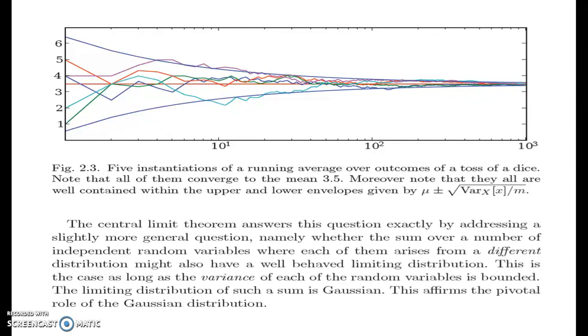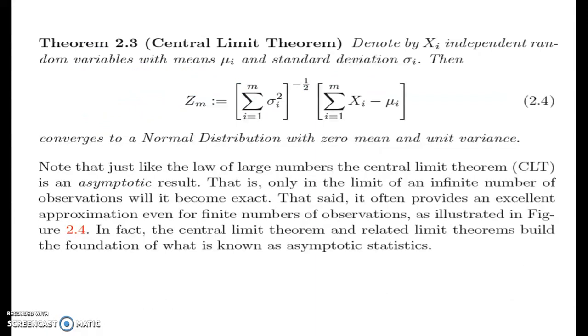Once we establish that the random variable x̄m equals m to the power of minus 1 sigma i equals 1 to m xi converges to its mean mu, a natural second question is to establish how quickly it converges and what the properties of this limiting distribution of x̄m minus mu are. In figure 2.2, the initial deviation from mean is large whereas as we observe more data the empirical mean approaches the true one. The central limit theorem answers this question exactly by addressing a slightly more general question, namely whether the sum over a number of independent random variables where each of them arises from a different distribution might also have a well-behaved limiting distribution. This is the case as long as the variance of each of these random variables is bounded. The limiting distribution of such a sum is Gaussian. This affirms the pivotal role of the Gaussian distribution.